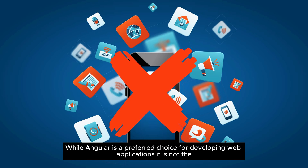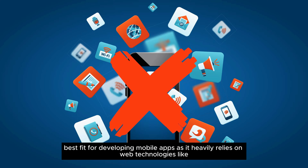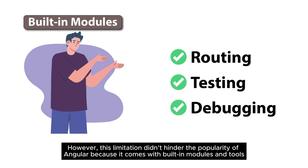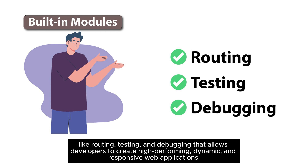While Angular is a preferred choice for developing web applications, it is not the best fit for developing mobile apps, as it heavily relies on web technologies like HTML and JavaScript, which cannot provide a native look for mobile apps. However, this limitation didn't hinder the popularity of Angular, because it comes with built-in modules and tools like routing, testing, and debugging that allow developers to create high-performing, dynamic, and responsive web applications.